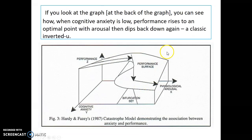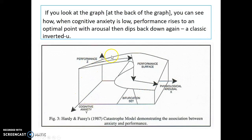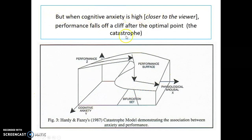If you look at the graph, you can see how when cognitive anxiety is low, performance rises to an optimal point with arousal then dips back down again — a classic inverted U. So that's the back of the graph here, you can see it just gradually dips. This is Fazey and Hardy's catastrophe model for arousal, performance, and cognitive anxiety. When cognitive anxiety is high, performance falls off a cliff after the optimal point. Here you can see performance just goes dramatically downwards, and it's very hard to regain this prior level of performance once you've gone past this point.